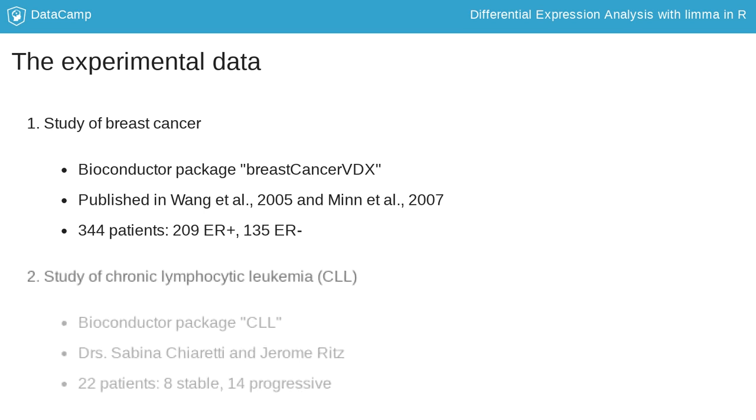In the exercises, you will analyze data from a study of chronic lymphocytic leukemia, or CLL for short. The study measured gene expression in 22 patients with CLL, 8 who were stable, and 14 whose disease was progressing.